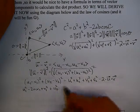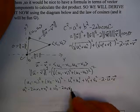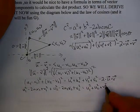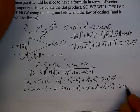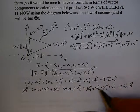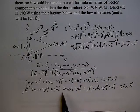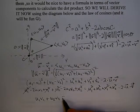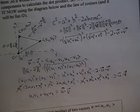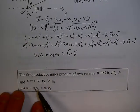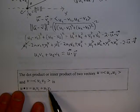This is the useful formula for the dot product, also called the inner product. For two vectors u equals (u1, u2) and v equals (v1, v2), u dot v equals u1 times v1 plus u2 times v2. This gives a way to calculate the dot product when vectors are in component form, without needing the magnitudes and angle explicitly.